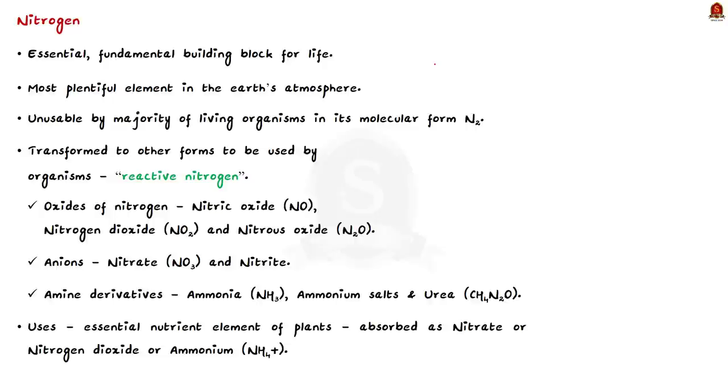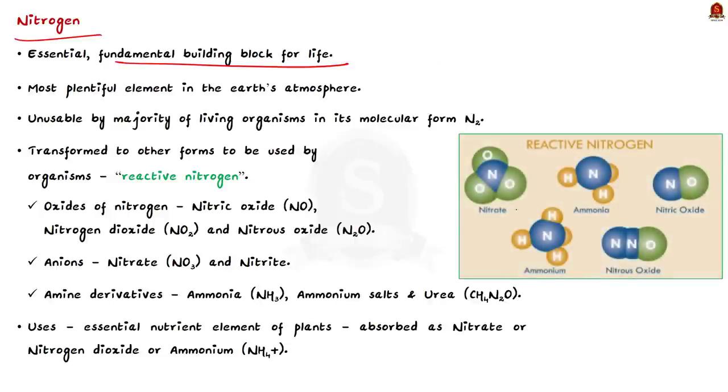Nitrogen is an essential fundamental building block for life. It is the most plentiful element in the Earth's atmosphere. And yet in its molecular form, that is as N2, nitrogen is unusable by the vast majority of living organisms. Therefore, for nitrogen to be used by organisms, it must be transformed or fixed into other forms. These other forms are together called as reactive nitrogen.